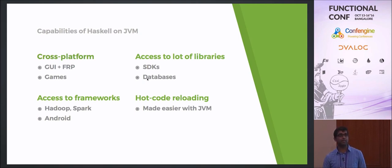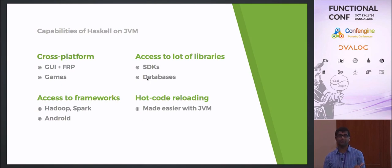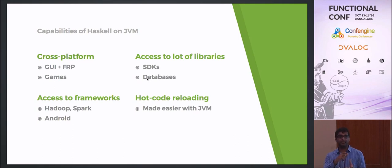Just a couple weeks back, I implemented a feature to export a Haskell function to Java. Say you have a Haskell function that takes an integer and returns another integer — something like a factorial function. That feature allows you to export it and call it as a normal Java function. The generated code initializes the GHCVM runtime system and does all the conversions necessary between Java types and Haskell types.